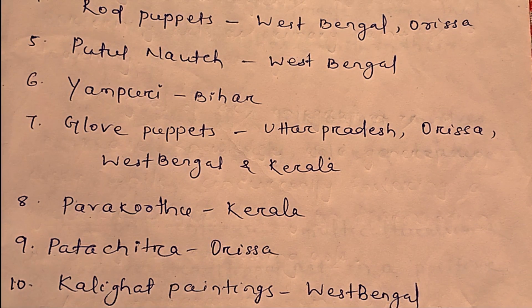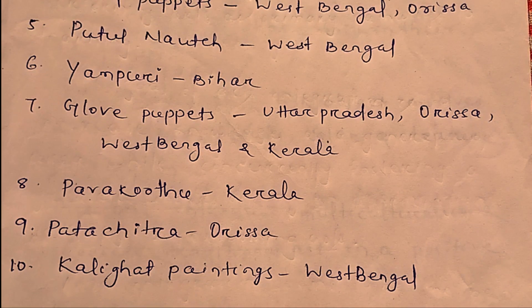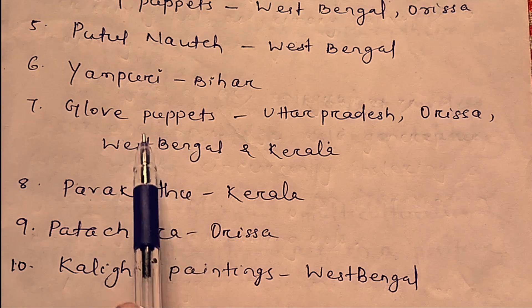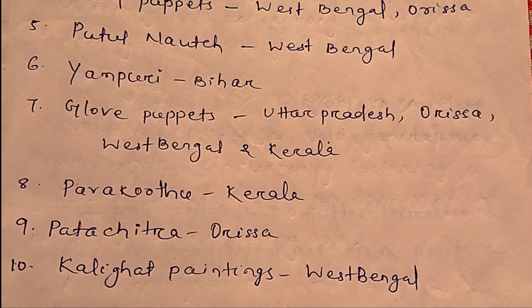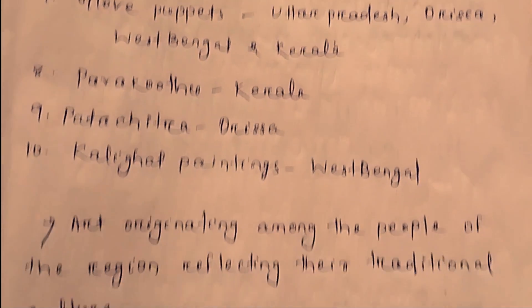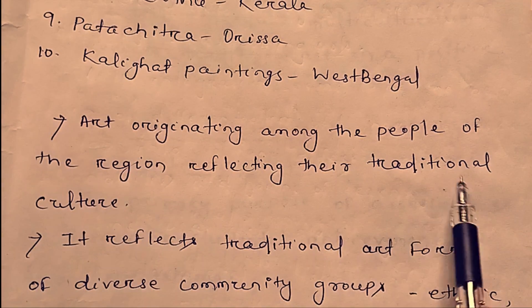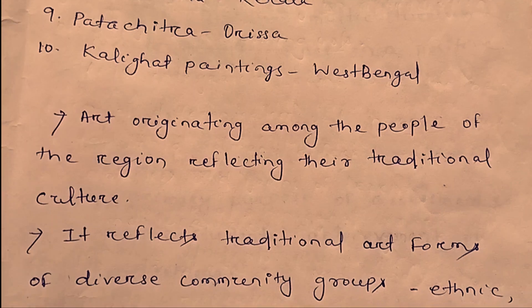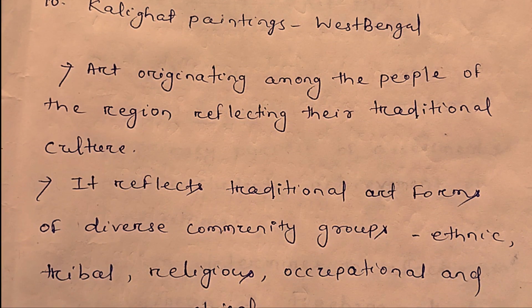Local art forms include those from Kerala and Odisha, such as Kalighat paintings. Local art originates among the people of a region, reflecting their traditional culture. Traditional art forms come from diverse community groups according to ethnic, tribal, religious, occupational, and geographical backgrounds.